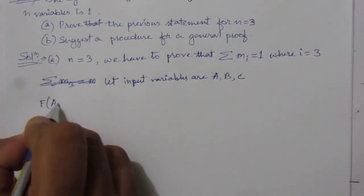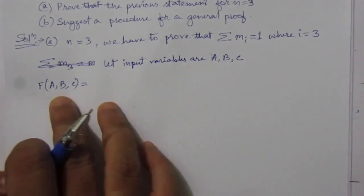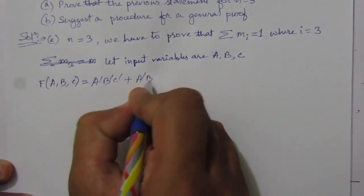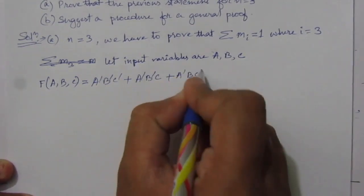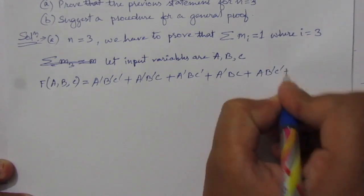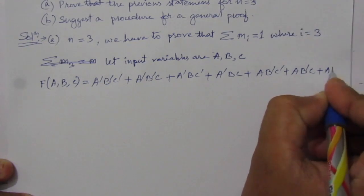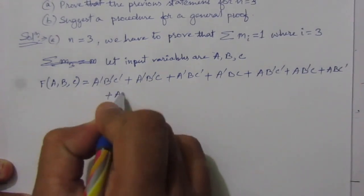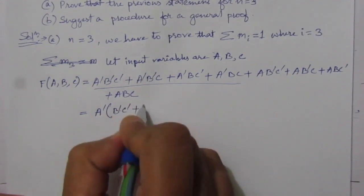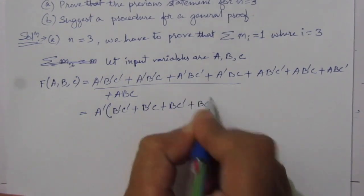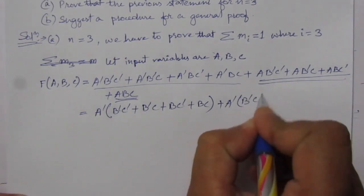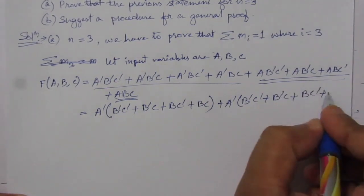So function f(a, b, c) equals — because we have 3 input variables we will have 8 combinations. So we will get: ā·b̄·c̄ + ā·b̄·c + ā·b·c̄ + ā·b·c + a·b̄·c̄ + a·b̄·c + a·b·c̄ + a·b·c. For the first four terms we can take ā common, giving us b̄c̄ + b̄c + bc̄ + bc.